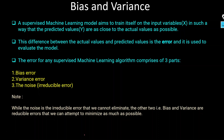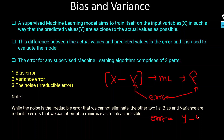Welcome to my YouTube channel. Today I am going to discuss bias and variance. Before starting, let's understand what error is. When we create a supervised machine learning model, we need input variables and output variables. Using these, we create a model and predict y-hat. The error is the difference between the actual value and the predicted value. We can classify error into three terms: bias error, variance error, and noise or irreducible error.